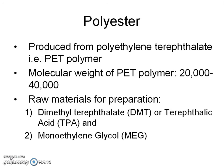Polyester is produced from polyethylene terephthalate, i.e. PET polymer. The molecular weight of PET polymer is in the range of 20,000 to 40,000. The raw materials used for polyester preparation are one of the components from dimethyl terephthalate (DMT) or terephthalic acid (TPA), and monoethylene glycol (MEG).